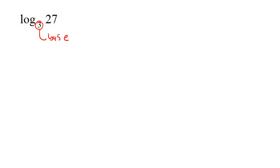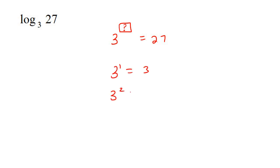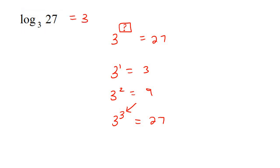This number at the bottom we call the base. So what they're saying is: 3 to the power of what is equal to 27? We know that 3 to the power of 1 is 3, 3 to the power of 2 is 9, and 3 to the power of 3 is 27 — so that would be the answer. If you typed this on a calculator it would just say 3.